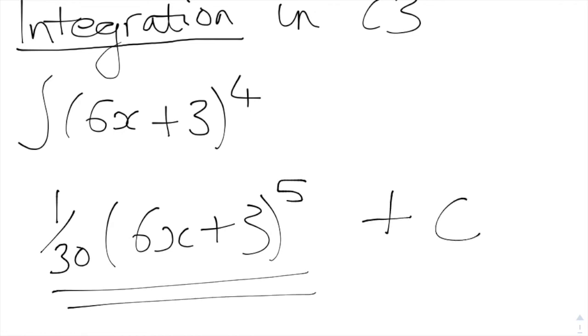And then there's no limits, so we're going to add a constant. Because if there was any other constant, that would become 0 in our differentiation. So that's how you do those sorts of integration.